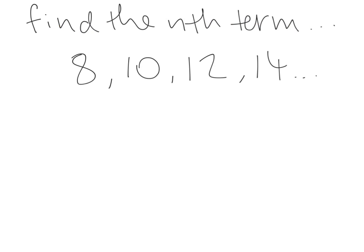Find the nth term of the sequence 8, 10, 12, 14. First, we investigate whether it's an arithmetic or linear sequence, because if it is we can use the zero term formula. To get from 8 to 10 we add 2, from 10 to 12 we add 2, and from 12 to 14 we add 2. Since the first difference is constant, we know it's an arithmetic sequence.